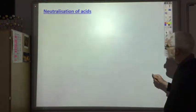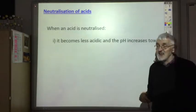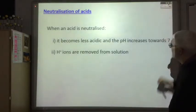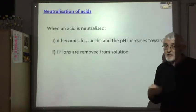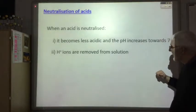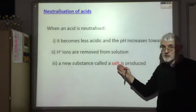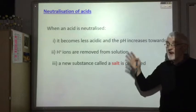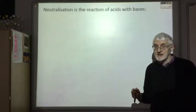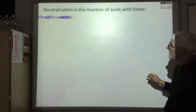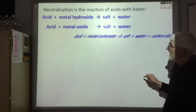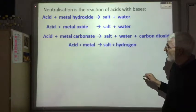When you neutralise an acid, three things happen: it becomes less acidic and the pH increases towards 7; H⁺ ions are removed from the solution and turned into water or hydrogen gas; and a salt is always produced. The substance which neutralises the acid is called a base, and the bases you should know are metal hydroxides, metal oxides, metal carbonates, and some metals.